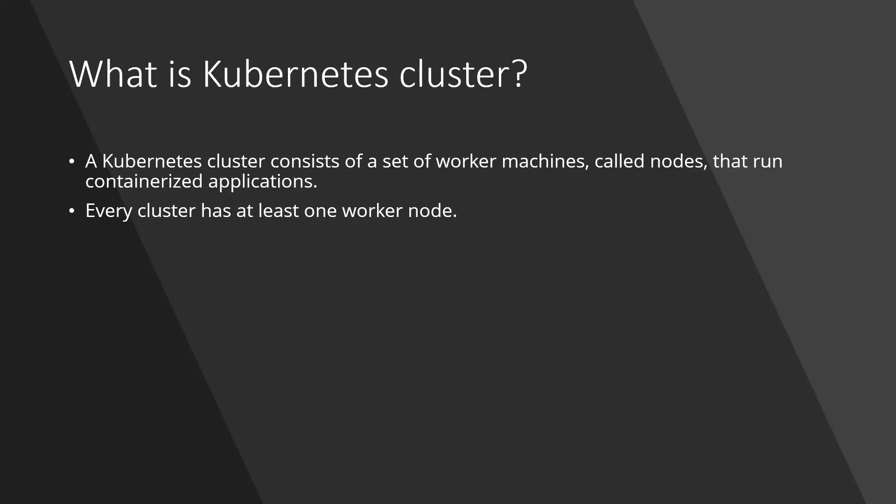Now let us look at Kubernetes to understand how it works and what are the different components. When we talk about Kubernetes, it is basically a cluster — a cluster which contains a set of worker nodes. The worker nodes are the workhorses where the actual work is getting done, and these are simply known as nodes. These nodes are the ones running our containerized applications. In a Kubernetes cluster there are nodes; minimum one node will be there, but usually we will have a couple of nodes to create a cluster. Every node will run a containerized application.